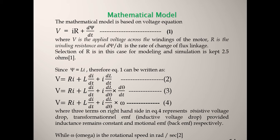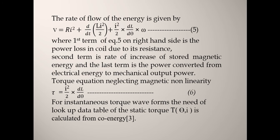The rate of flow of energy is also given: V·i = Ri² + d/dt(Li²/2) + power converted to mechanical energy. In equation 5, the first term on the right-hand side is the power loss in the coil due to resistance, the second term is the rate of increase of stored energy (where ½Li² is the stored energy), and the last term is the power converted from electrical energy to mechanical energy.